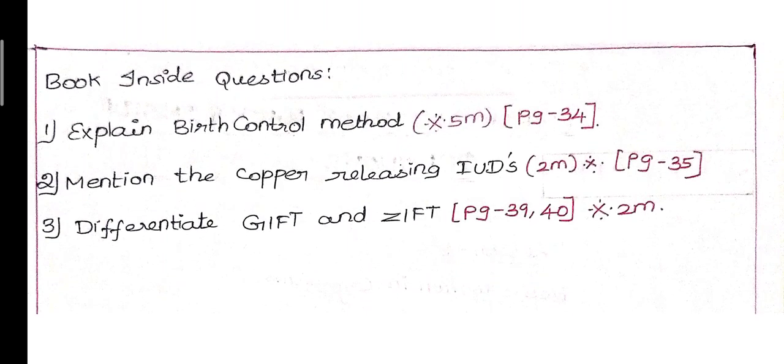Next, third question: Differentiate GIFT and ZIFT. GIFT means Gamete Intra Fallopian Transfer. ZIFT means Zygote Intra Fallopian Transfer. Here you will get 1 mark, that is page number 39-40. This is differentiate, then the two points are two points. This is an important question.